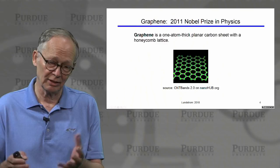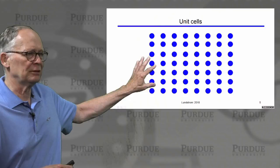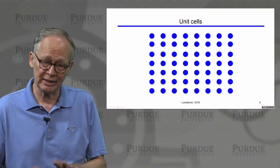Graphene is just one example. In this course, we're largely going to be discussing three-dimensional bulk semiconductor materials, and we'll use these pictures only to illustrate concepts that apply to both 2D materials and 3D as well.